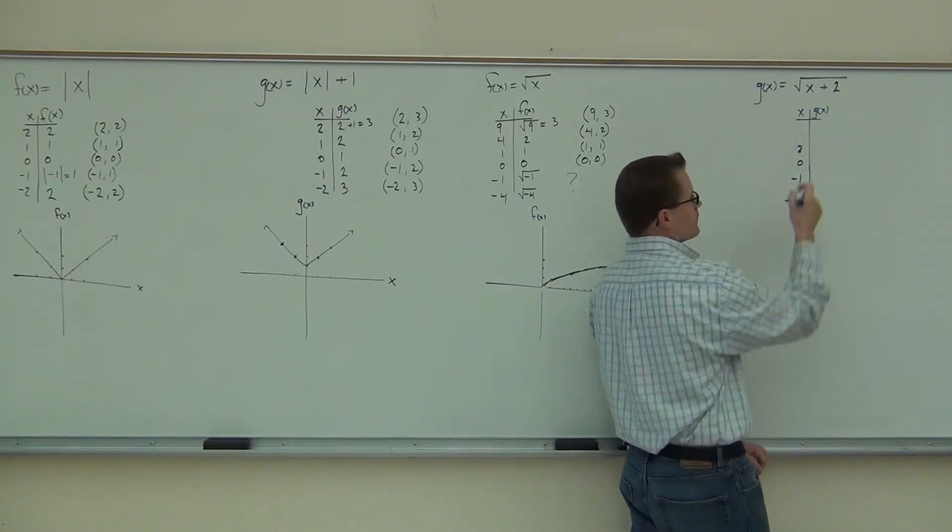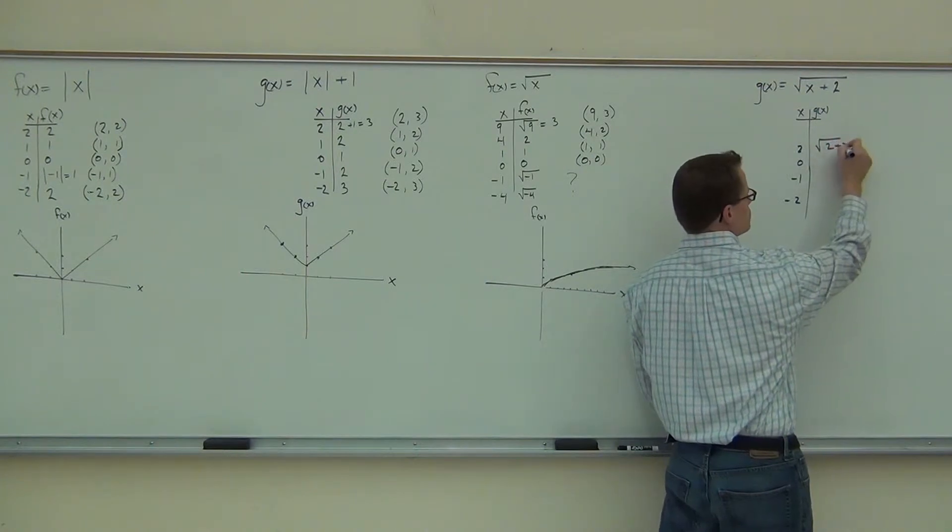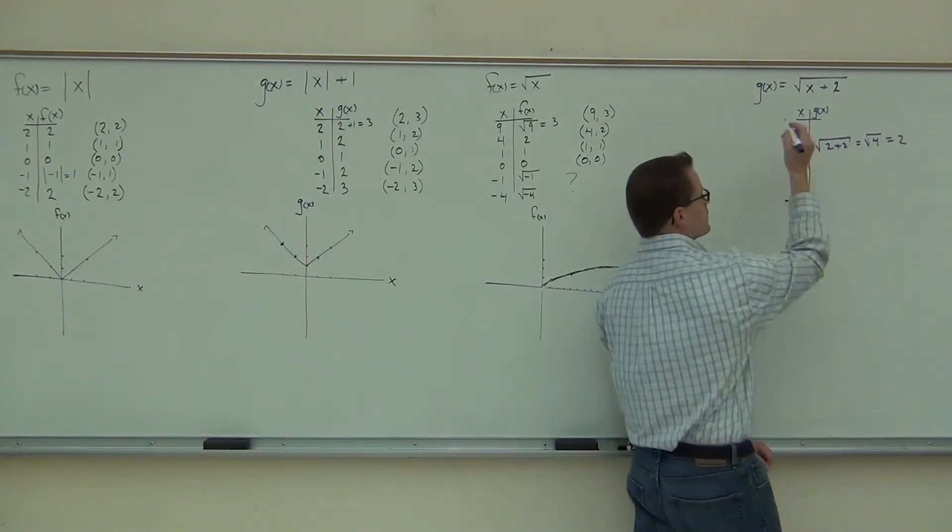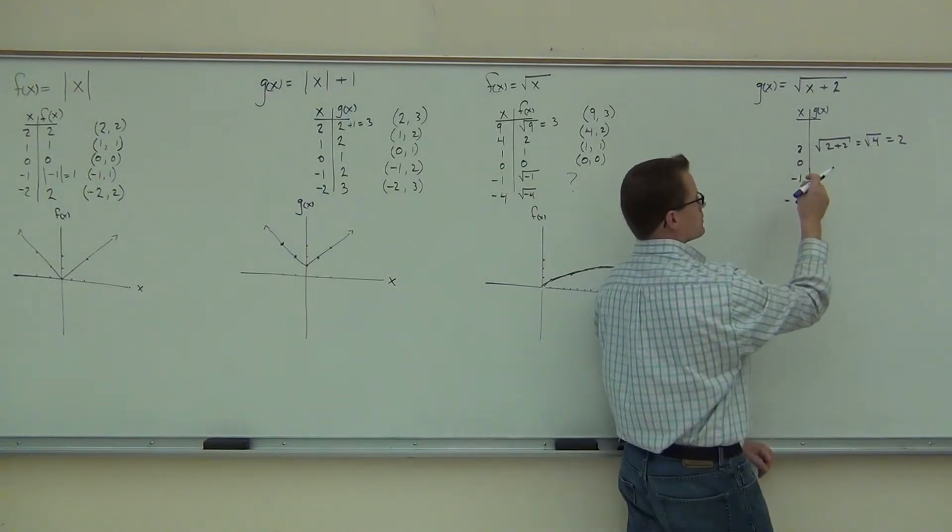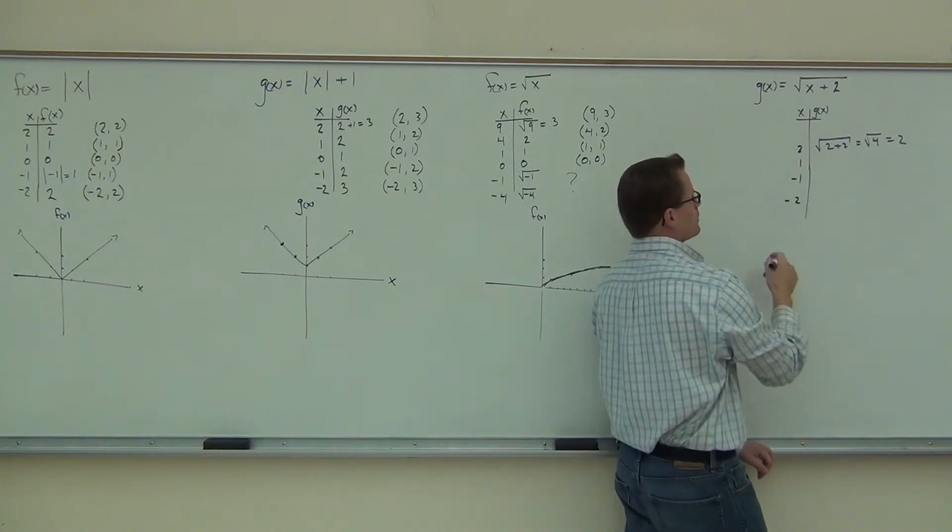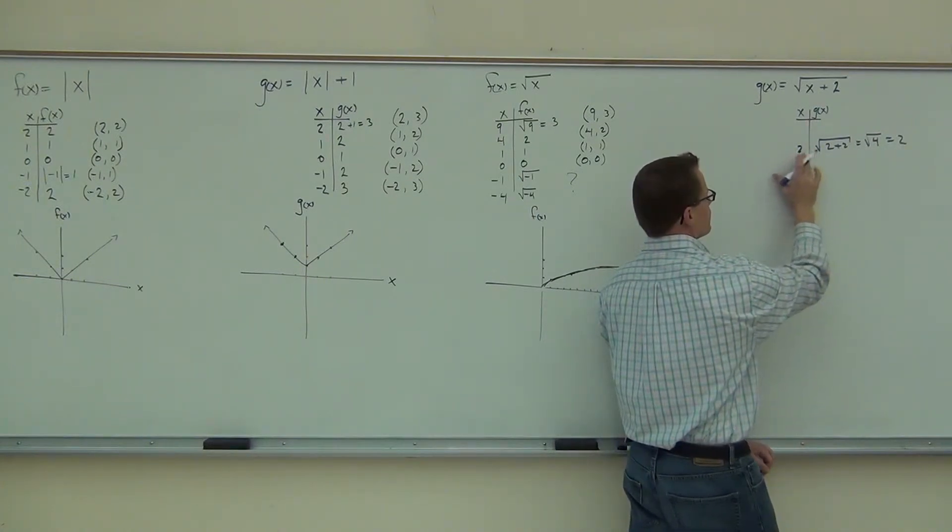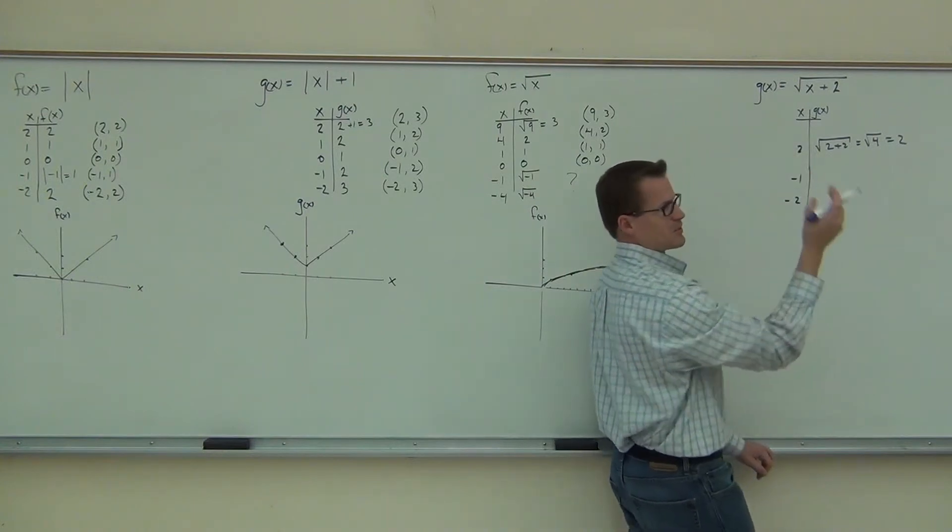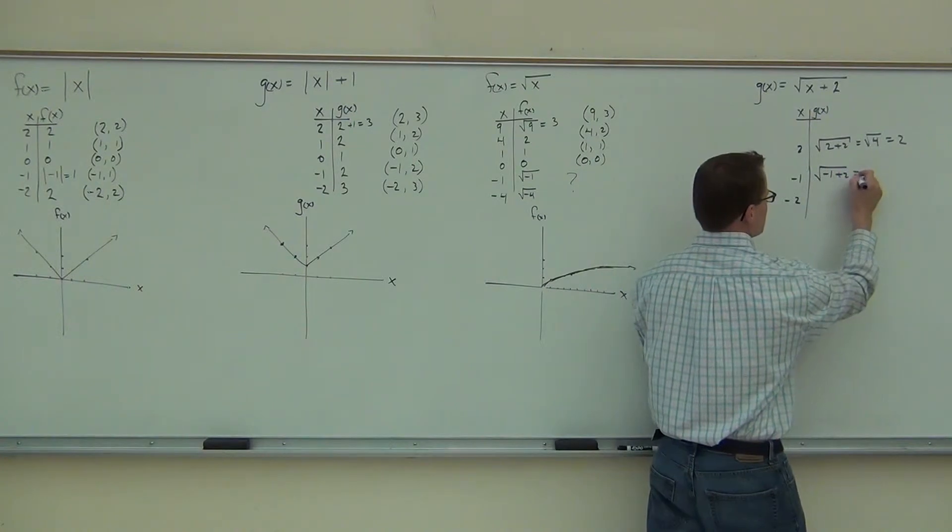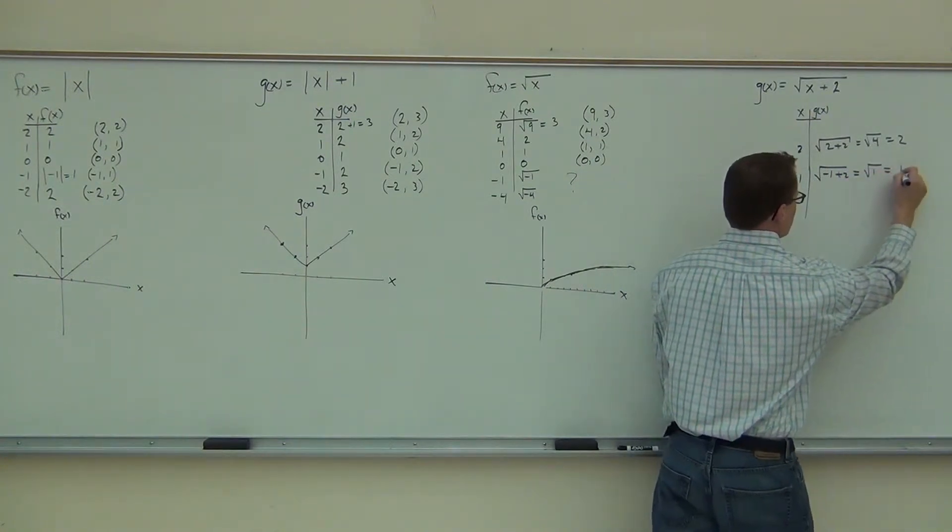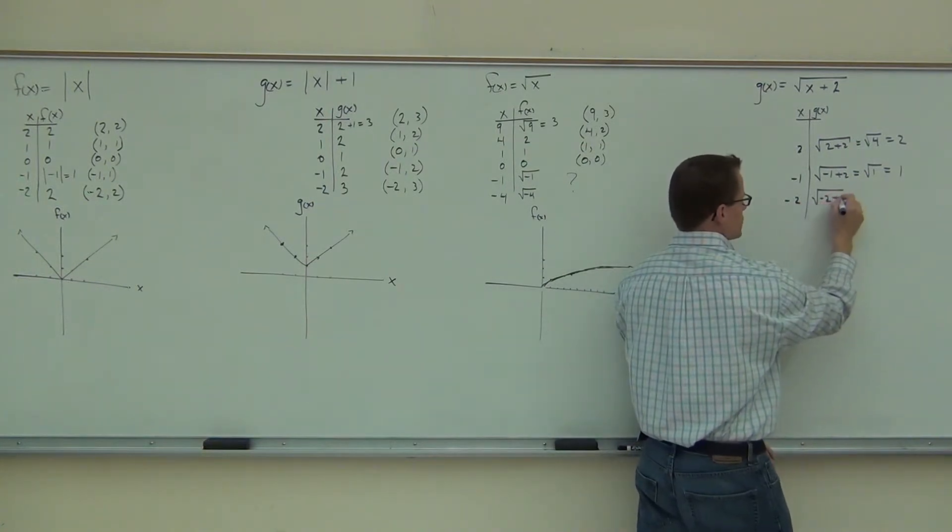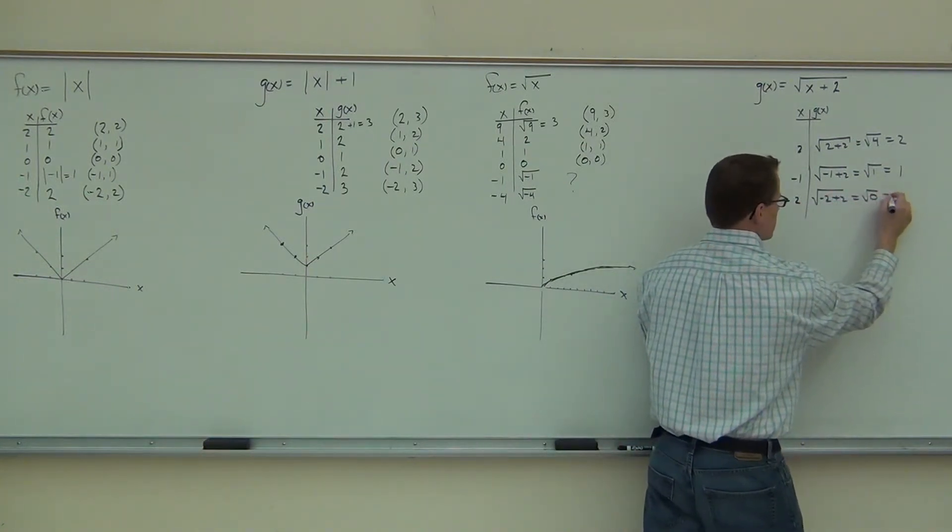Because two plus two is going to give me four. So, let's try this out. If I take two, I get the square root of two plus two. That's giving me the square root of four, which is two itself. I just want you to see what happens here. Negative one plus two, that's going to give you positive one. That's going to give you one. Now, if I do negative two, the square root of negative two plus two is zero. It's going to be zero, zero.